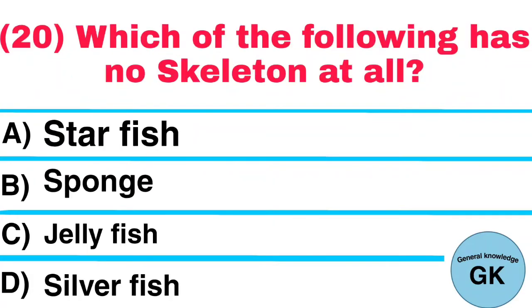Question number 20. Which of the following has no skeleton at all? A. Starfish, B. Sponge, C. Jellyfish, D. Silverfish. Answer: Jellyfish.